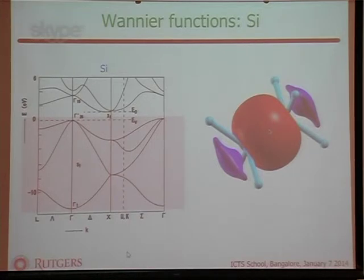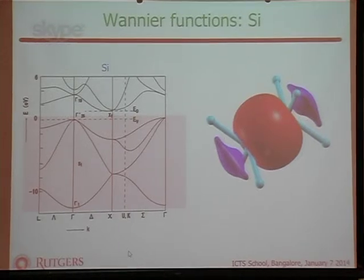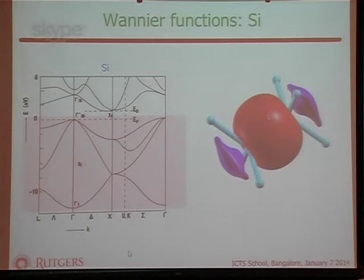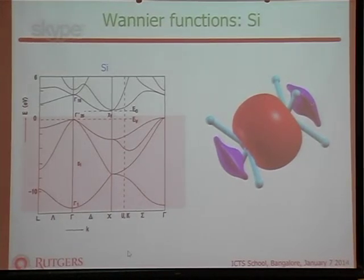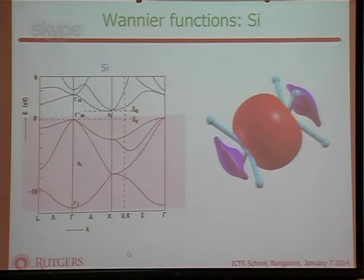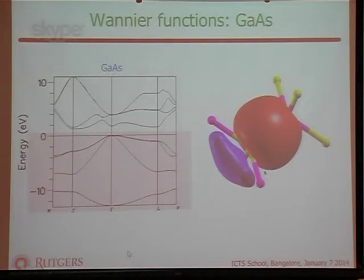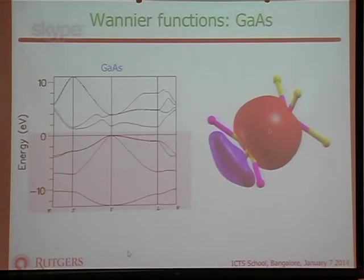For silicon, the Wannier functions are located in the centers of the bonds. Here's an isosurface plot of one Wannier function: the red isosurface is for positive amplitude and the blue for negative amplitude. The center of this Wannier function is in the center of the bond between two silicon atoms. For GaAs instead of silicon, the arsenic is more electronegative, so it pulls the Wannier function towards it — the center is no longer exactly in the middle of the bond but is shifted toward the more electronegative atom.